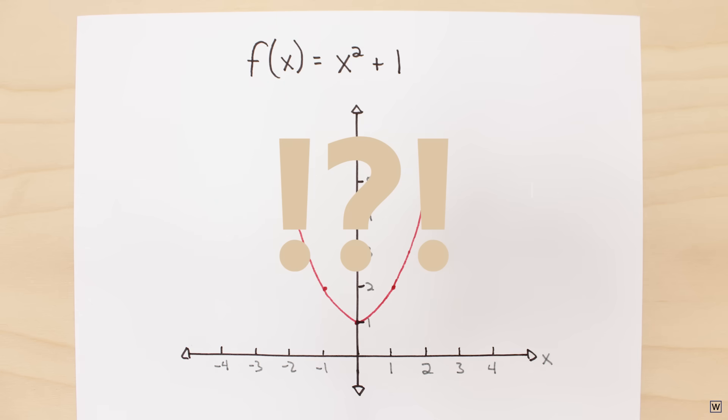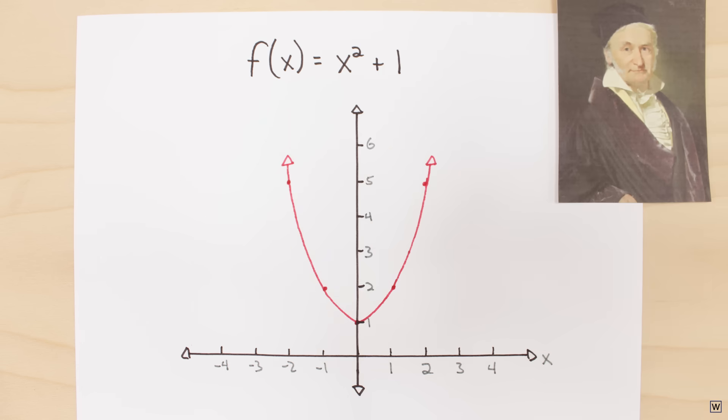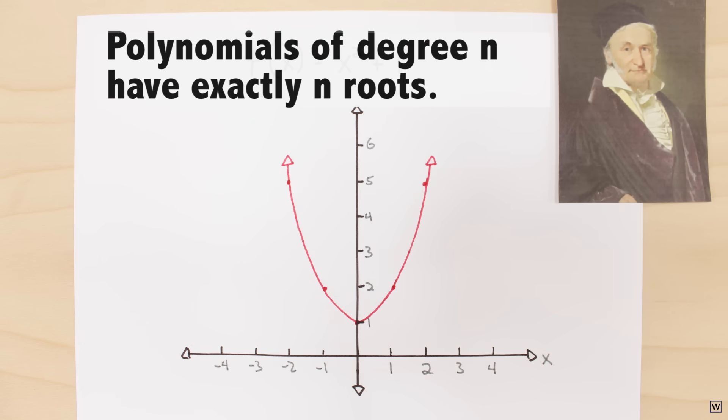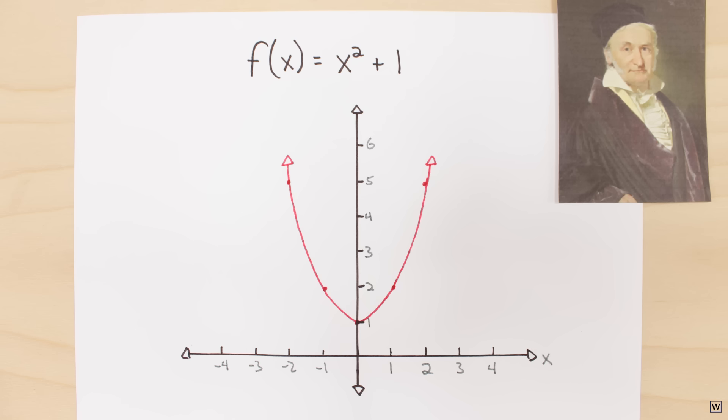But there's a small problem. A little over 200 years ago, a smart guy named Gauss proved that every polynomial equation of degree n has exactly n roots. Our polynomial has a highest power, or degree, of 2. So we should have two roots.